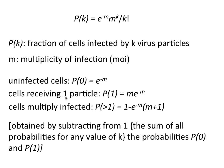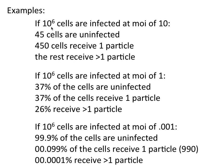We can simplify this with specific cases: uninfected cells (P₀) simplifies to e to the minus m; cells receiving one particle (P₁) is m times e to the minus m; and multiply-infected cells (P greater than one) can be calculated from the formula. For any multiplicity — 1, 10, 500 — you substitute the MOI value for m, solve, and get the fraction of uninfected cells, cells receiving one particle, or multiply-infected cells.